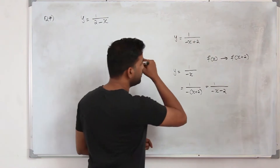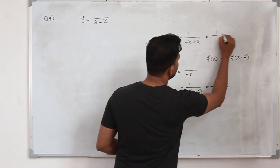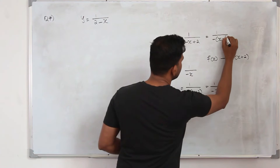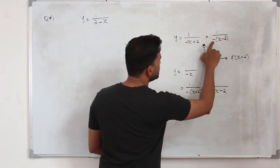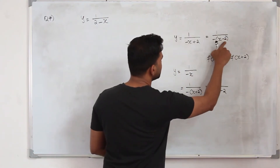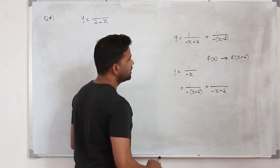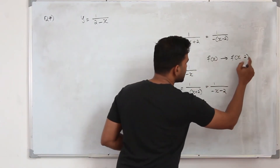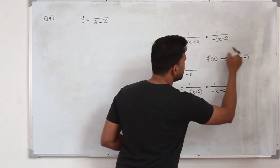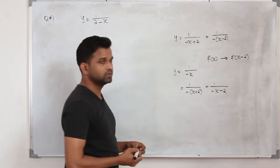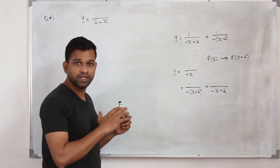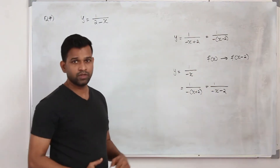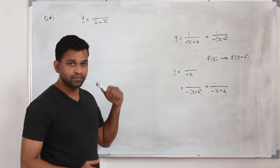What we need to do is take minus out, so you can write it as 1 upon minus of (x minus 2), because multiplying minus x plus 2 gives you that. So you are actually replacing x by x minus 2, meaning the graph has to be translated to the right side 2 units, not to the left side.